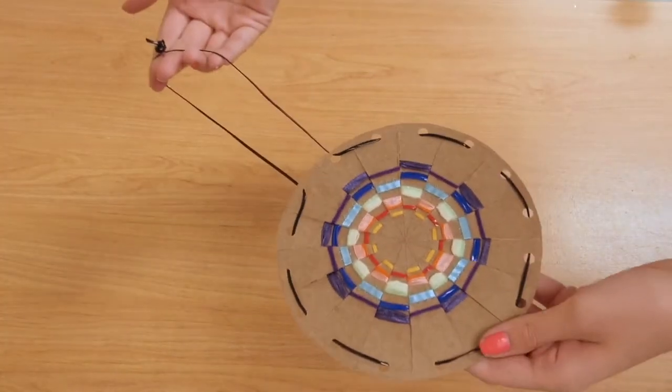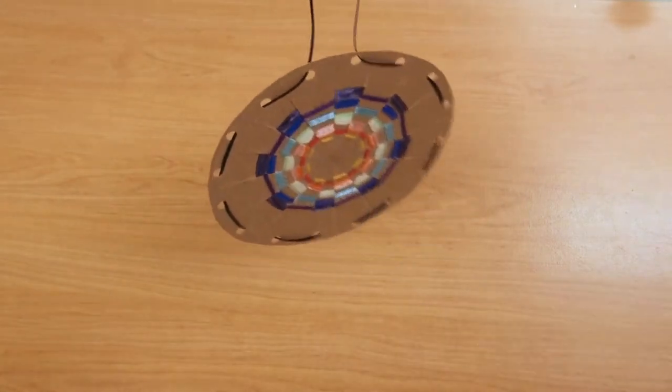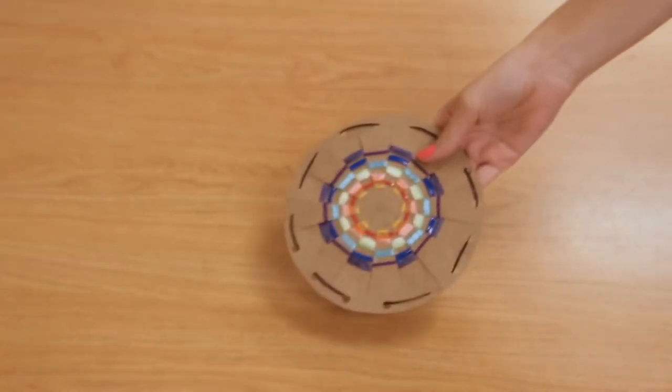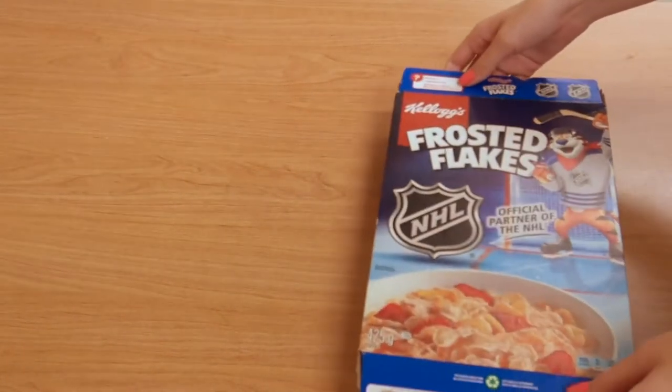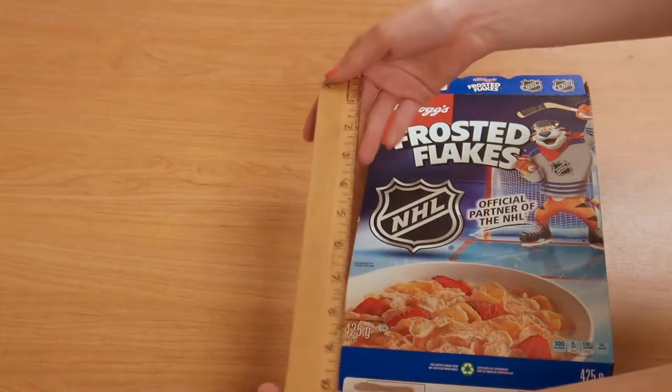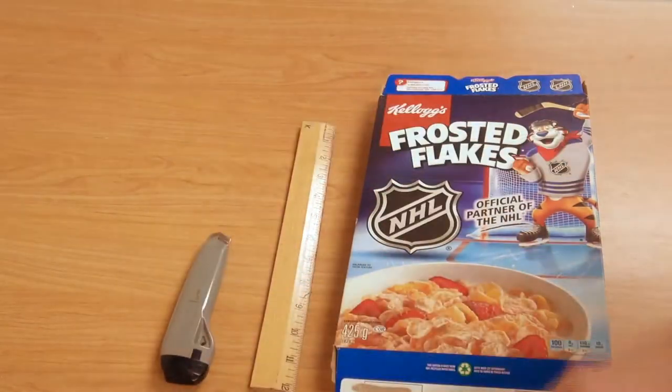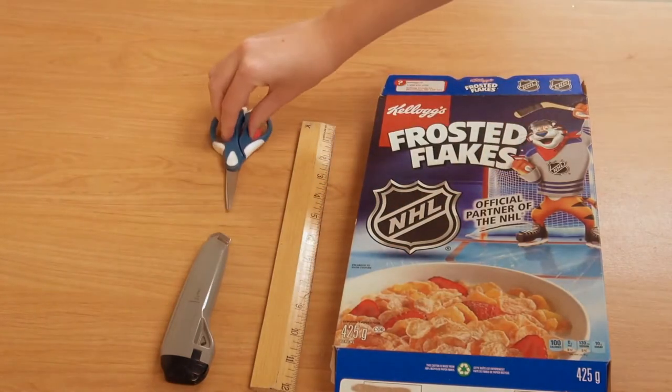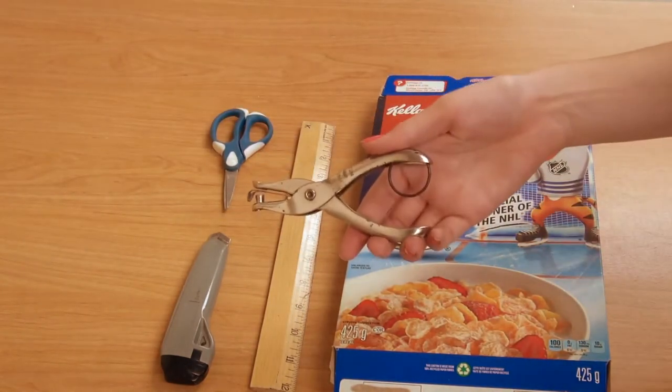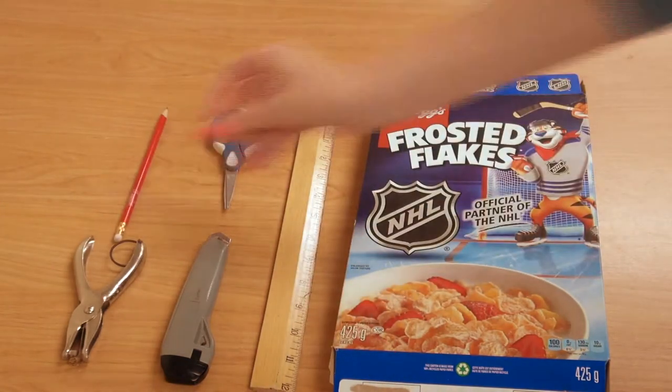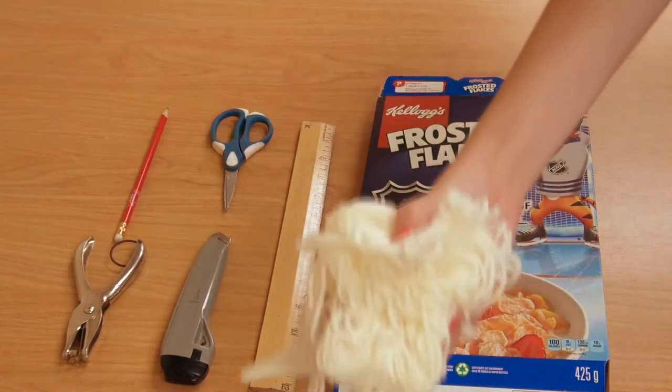For our final craft, we will be showing you how to make a woven cereal box sun decoration. This craft is better for older kids, but it's fun for anyone to try. All you need for this craft is a cereal box, a ruler, an exacto knife, scissors, a hole punch, pencil, and various pieces of colored string.